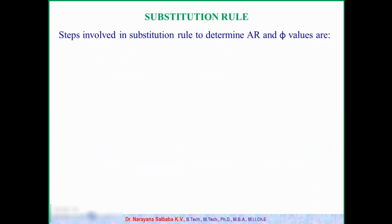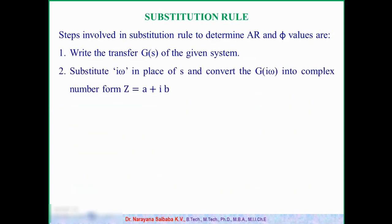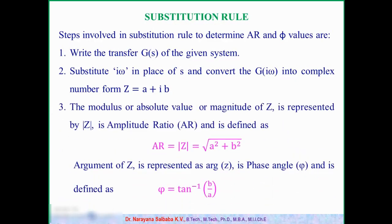In substitution method, we will have three steps. First step is we have to write the transfer function of the given system. Second step, we have to replace all s terms with the i*omega and we have to convert the given transfer function into complex number form that is Z = A + iB. Once we have this complex number form, then amplitude ratio is nothing but the modulus of the complex number that is square root of A^2 + B^2. Similarly, phase angle is given by the argument of the complex number that is phi = tan^(-1)(B/A). In this way, by using the two formulas, we can calculate the amplitude ratio and phi for any unknown system.